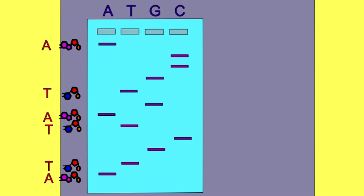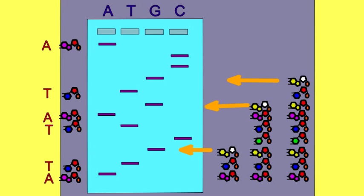In the same way, there are three bands in the guanine lane and three bands in the cytosine lane.